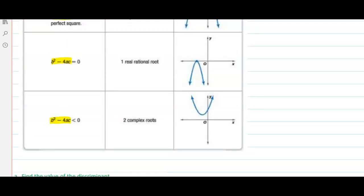When the discriminant is negative, think about what that means. A negative number under the radical. That's going to be an imaginary number or complex number.